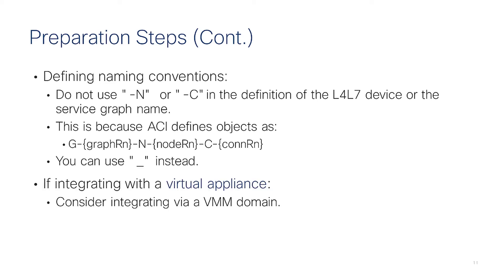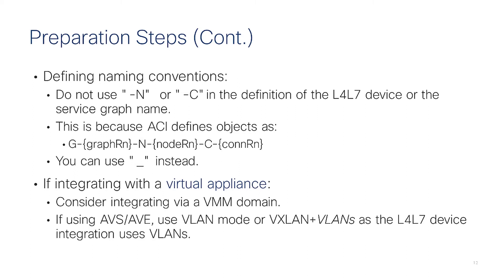If you decide to integrate a layer 4-7 virtual appliance, we suggest integrating it via a VMM domain. If you're using AVS or AHV, you can choose VLAN mode, but if you use VXLAN mode you also need to define a VLAN pool, because the interfaces from the service devices use VLANs.